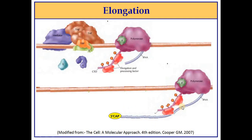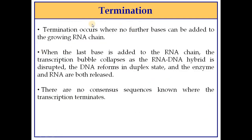Termination occurs when no further bases can be added to the growing RNA chain. When the last base is added, the transcription bubble collapses as the DNA-RNA hybrid is disrupted, the DNA reforms into duplex state, and both the enzyme and RNA are released.